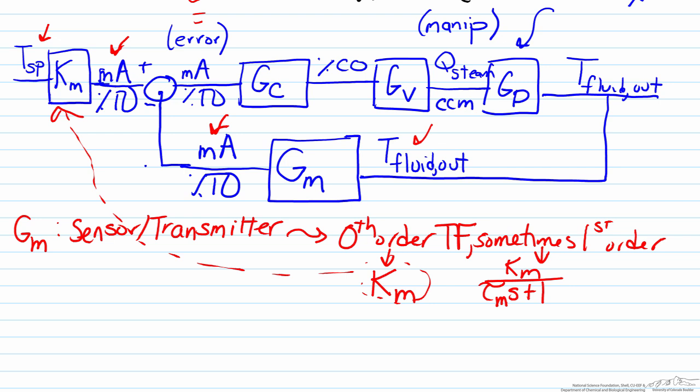Therefore the gain for the sensor transmitter transfer function must be exactly equivalent to the one that is handling the set point temperature. And again this doesn't matter what type of variable it is.